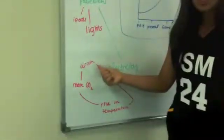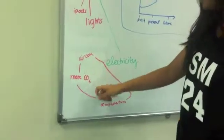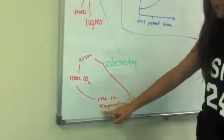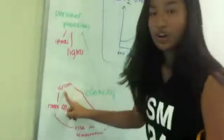we have aircon usage or something that's in your sphere of influence. So aircon usage leads to more CO2. More CO2 then causes a rise in temperature. And then a rise in temperature will eventually lead back to more aircon use.